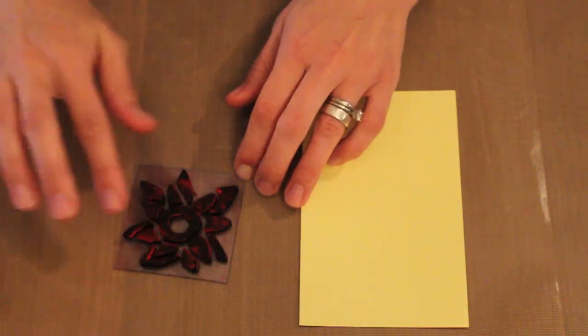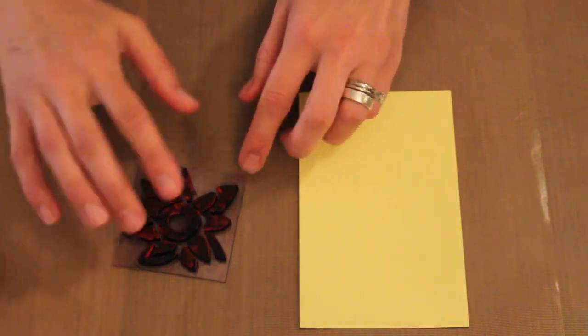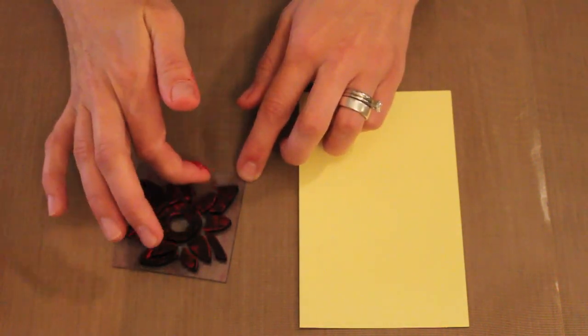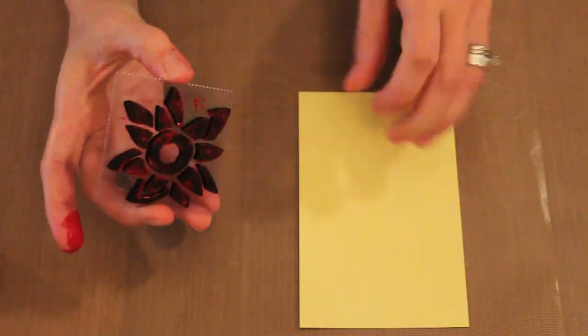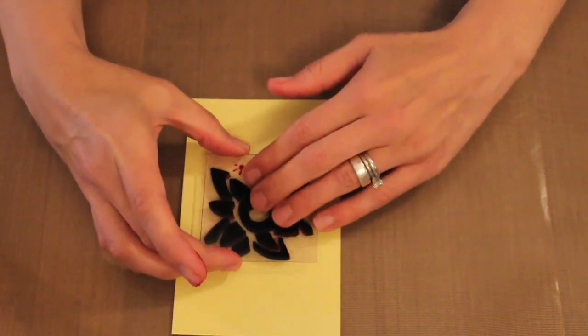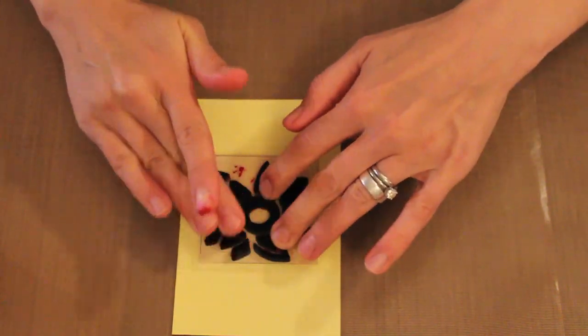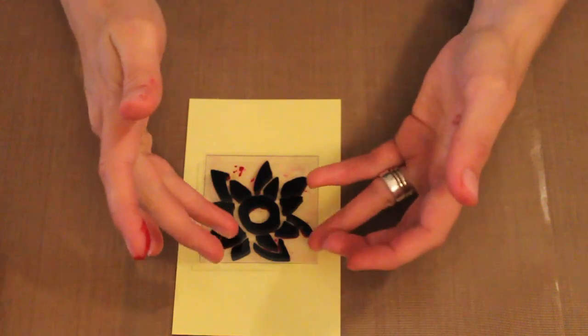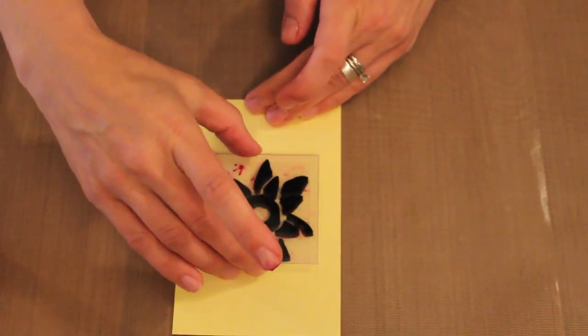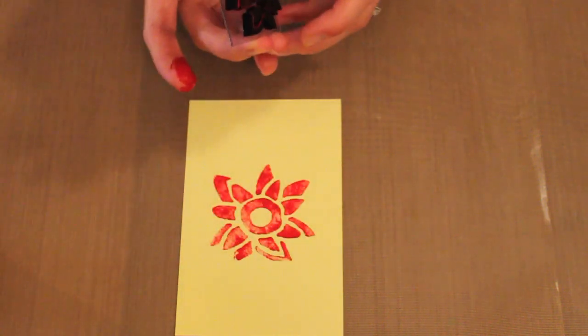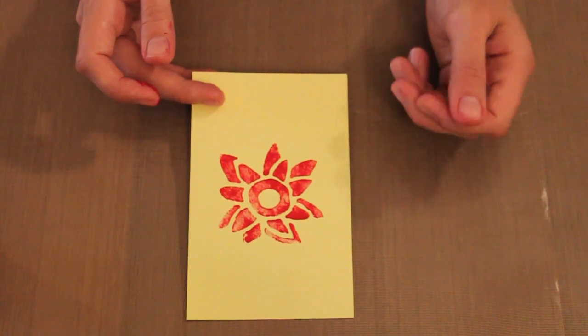I'm just swiping this on here, I don't want it really thick but enough so that I'm going to get a good impression. Make sure I don't have any globby blobbies. Then I just turn this over and press onto my yellow cardstock. It's not going to be a perfect impression. It's an outline of the stamp so it's going to give me a really cool stencil design which goes really nicely with the stencil that I've got on my background paper.